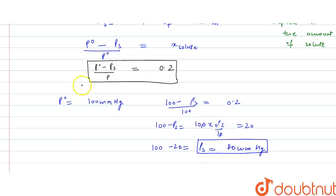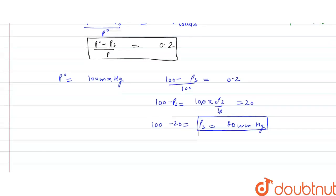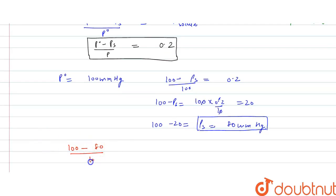We can cross-check: P0 = 100, Ps = 80, so relative lowering = (100 − 80) / 100 = 20/100 = 0.2, which equals the mole fraction of the solute. This confirms our answer.